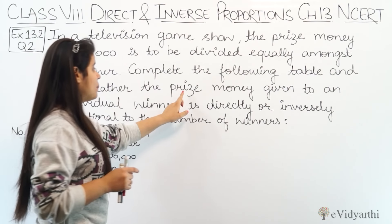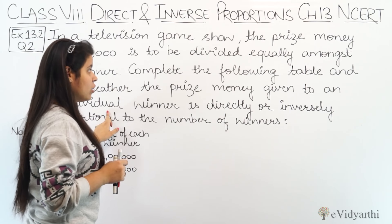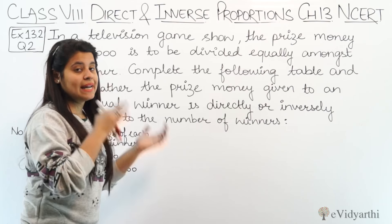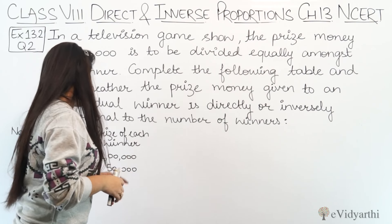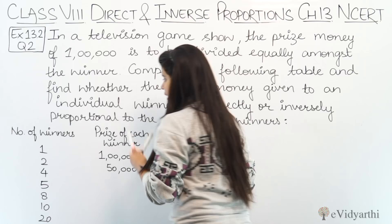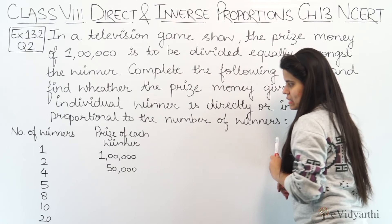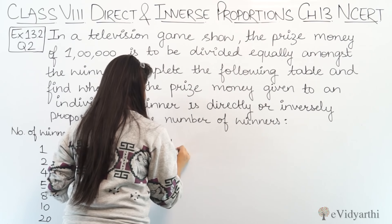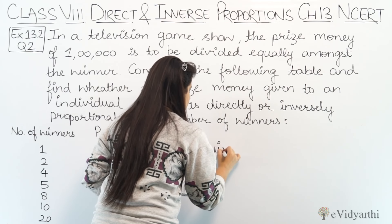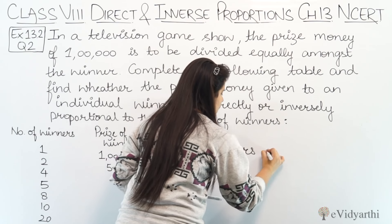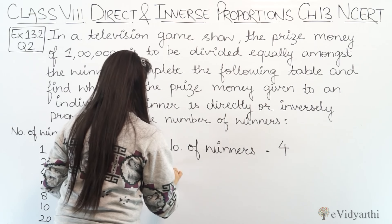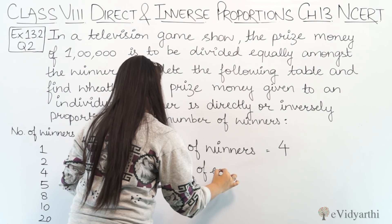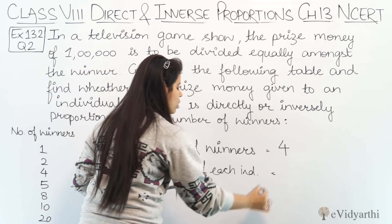Kin dono ka relationship? Prize money given to an individual and the number of winners — jo unhe prize mil raha hai, wo directly proportional hai ya indirectly? Starting with the first one: hume jo given hai, 1 winner ka given hai, 2 winners ka given hai. Agar number of winners 4 hote hain, so if number of winners equals 4, then prize of each individual kitna hoga?